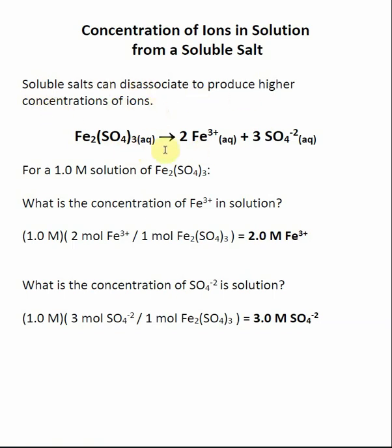There's a ratio here. When we dissociate iron(III) sulfate, we end up making two Fe³⁺ and three sulfate anions. That ratio is going to affect the concentration of these species, and remember, that's what we want to know because it's these species that are going to be involved in reactions.